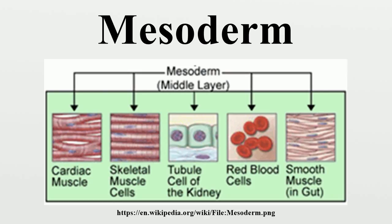There are three important components: the paraxial mesoderm, the intermediate mesoderm, and the lateral plate mesoderm. The paraxial mesoderm forms the somitomeres, which give rise to mesenchyma of the head and organize into somites in occipital and caudal segments. Somites give rise to the myotome, sclerotome, and dermatome. Signals for somite differentiation are derived from surrounding structures, including the notochord.